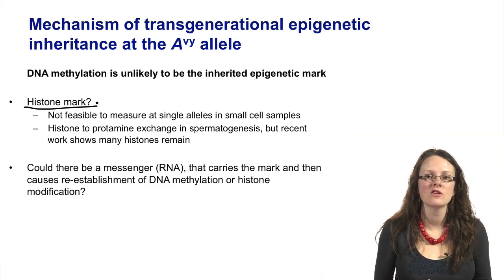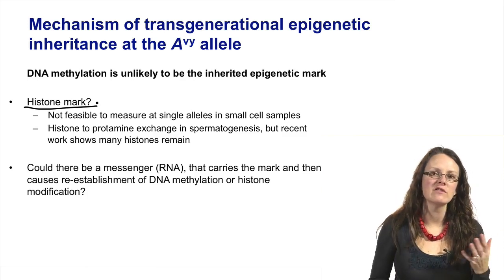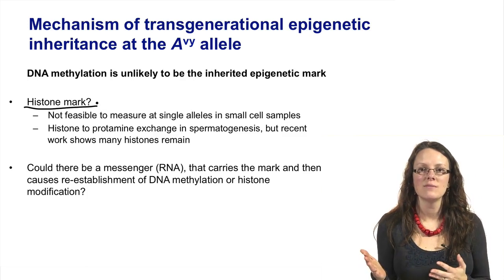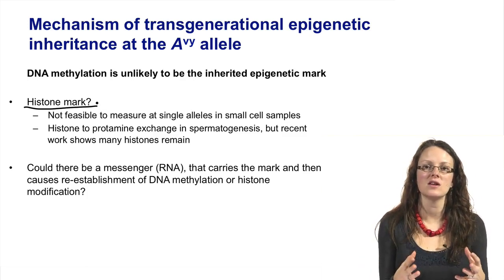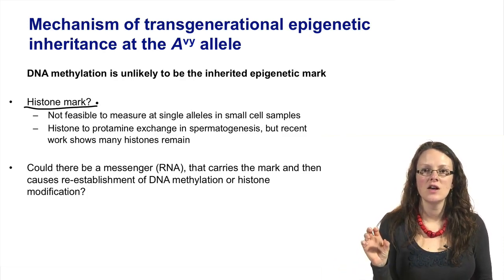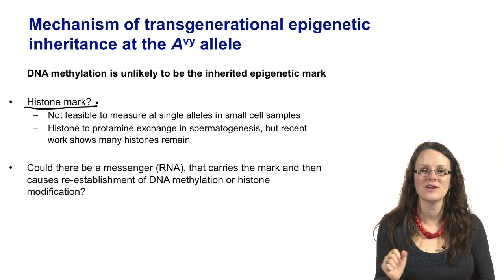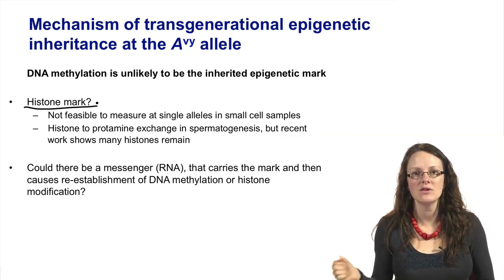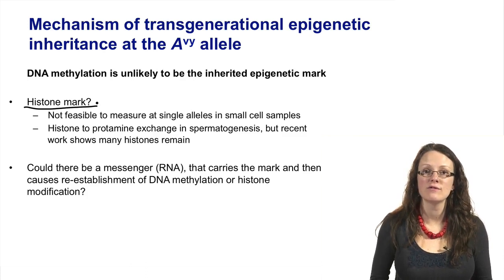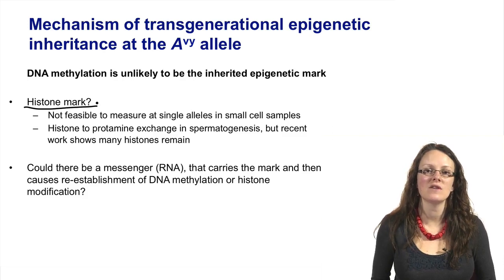The other option we'll discuss in the next lecture is the idea of a messenger molecule. While DNA methylation may not be the heritable epigenetic mark across generations, there could be some messenger that is carried through the period of reprogramming, helping to carry the signal of transgenerational epigenetic inheritance and helping to establish those marks differently post-implantation. At the moment it's thought this messenger could be RNA, with evidence from both plants and mammals. In the next lecture we'll think about these effects of RNA molecules that may influence transgenerational epigenetic inheritance.